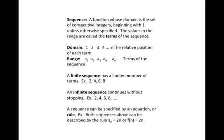A sequence can be specified by an equation or rule. Both sequences above can be described by the rule that the nth term equals 2 times n, because the first term equals 2 times 1, the second term 4 equals 2 times 2, 6 is 2 times 3, and 8 is 2 times 4. So in general, a_n equals 2n.